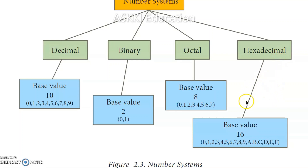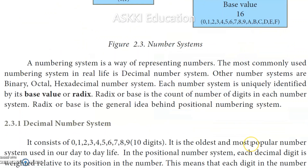The hexadecimal number system uses 16 digits total: 0 through 9, and then the values 10 through 15 are represented by the first six English alphabets in capital letters — A for 10, B for 11, C for 12, D for 13, E for 14, and F for 15. That gives us 16 hexadecimal digits, which is why the base value is 16.